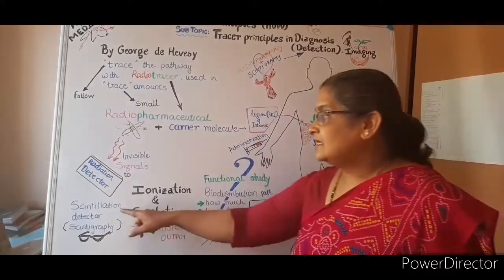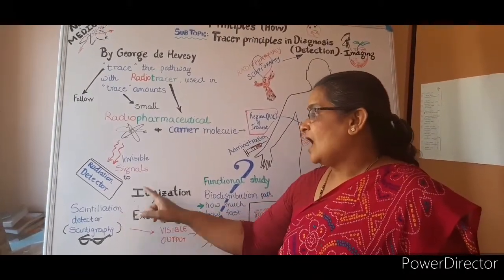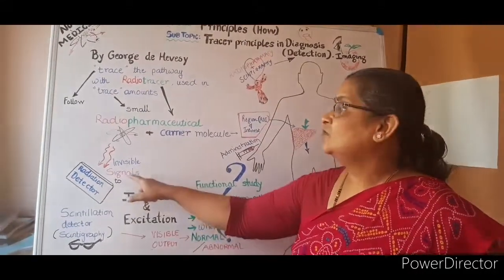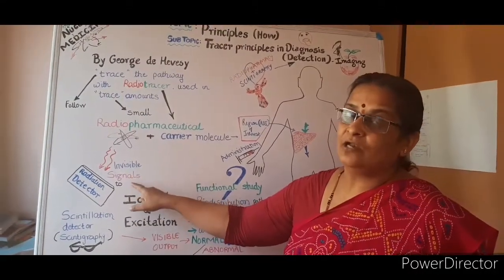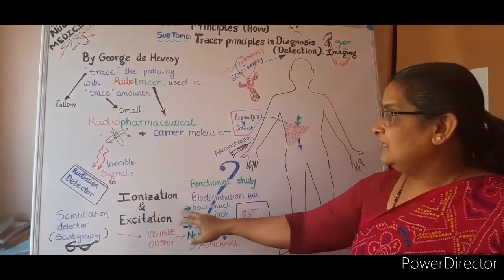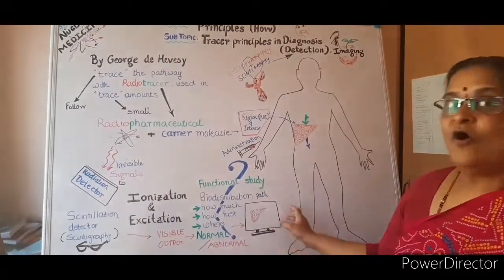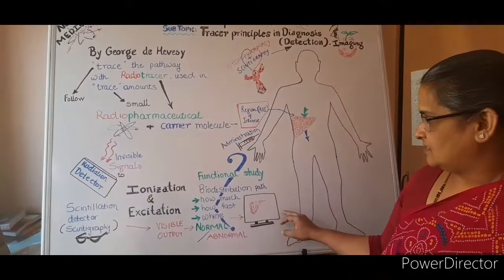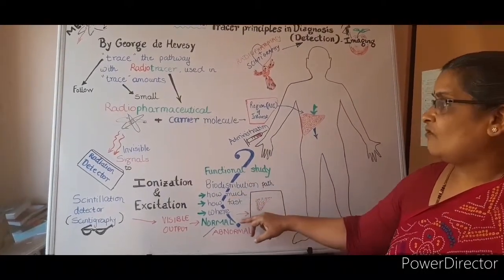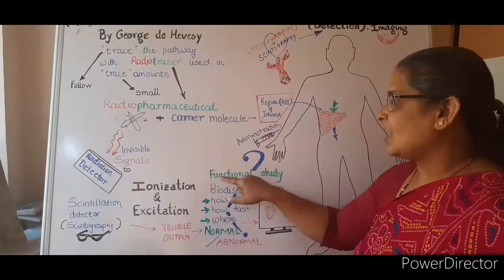The scintillator is the material on which ionization and excitation happen due to these invisible nuclear radiation signals. These will then be measured and displayed on the monitor to answer the questions for the final interpretation.